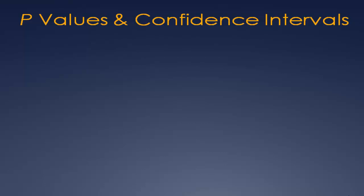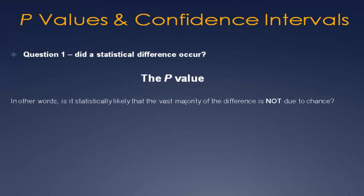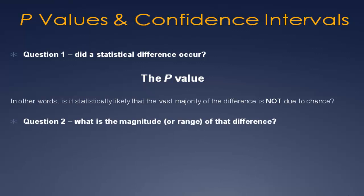How confident can we be that a research study using a sample population is statistically sound enough to apply to a larger similar group of patients? There are two methods. One is the p-value — the representation that the vast majority of the difference between groups is not due to chance. The most commonly used is 0.05, meaning only a 5% probability that the difference was due to chance. There are also ranges of results within a study that can be demonstrated using a confidence interval. A 95% confidence interval essentially means the true value is likely to fall in the stated range 95% of the time. It is affected by the occurrence of the outcome of interest — generally, more patients means a narrower CI range, meaning it's more precise.